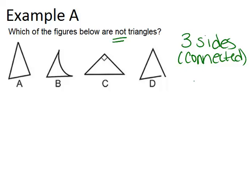When I look at these, A is definitely a triangle—three sides all connected, all straight lines. B is not a triangle because of this curved side.